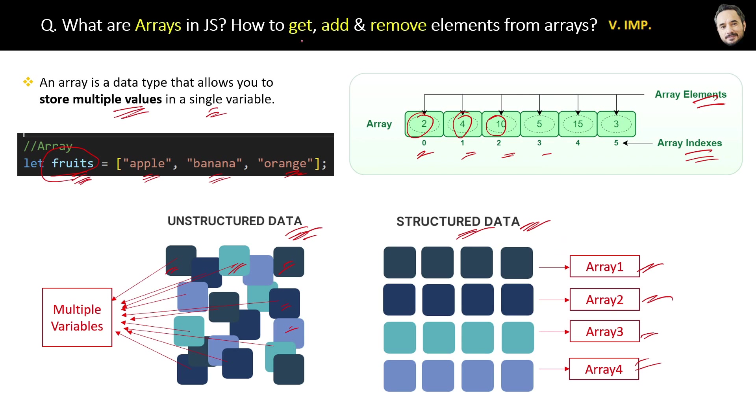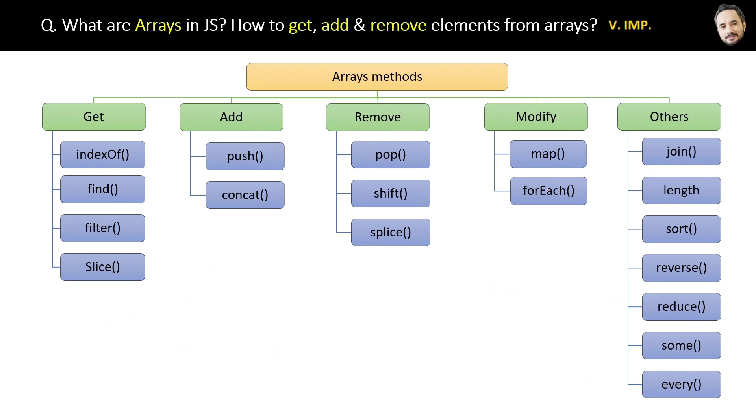The next part is how to get, add, and remove elements from an array. Here is a list of the methods of the arrays to do all these operations. Get methods are there to get any specific or particular element of any array. Add methods are used to add more elements to an array. Remove methods are used to remove or delete elements from an array. Modify methods are used to modify the elements of the array. For example, if you change the spelling of apple element by using the array modify methods. Then there is a list of other methods also that can be used for different purposes.